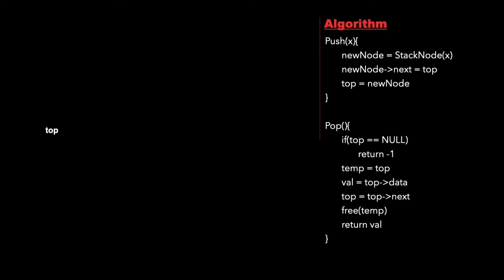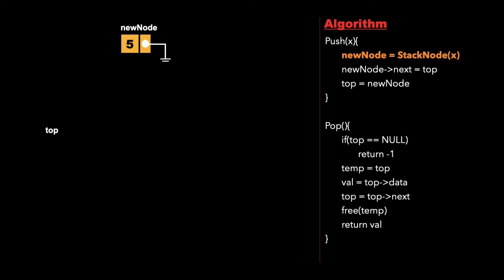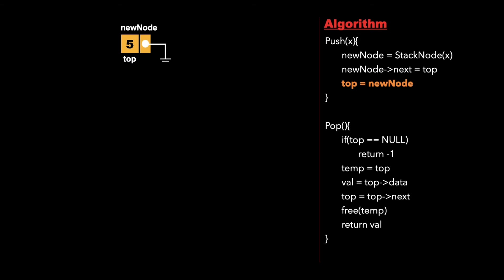The right side of the screen shows the algorithm with two functions: push and pop. For the push function, assume the stack is initially empty and we want to insert an element with value 5. We create a new node with value 5 and the next pointer pointing to null. Then we make new node's next point to top, which was null, and then we make top equal to new node, so top now points to node 5.